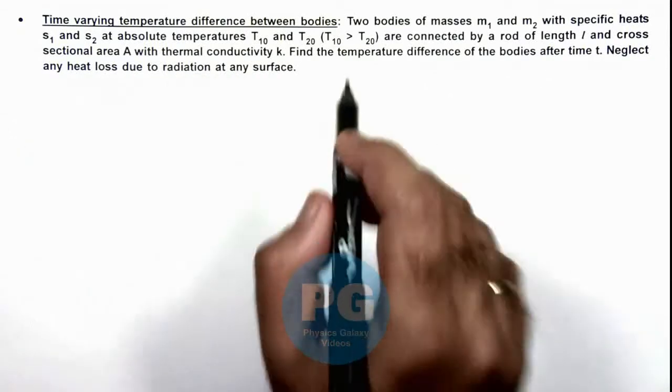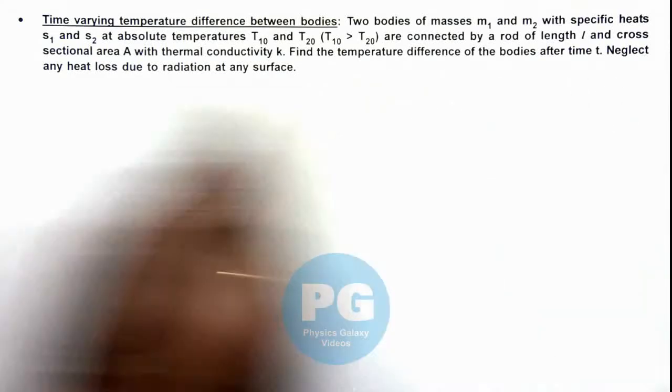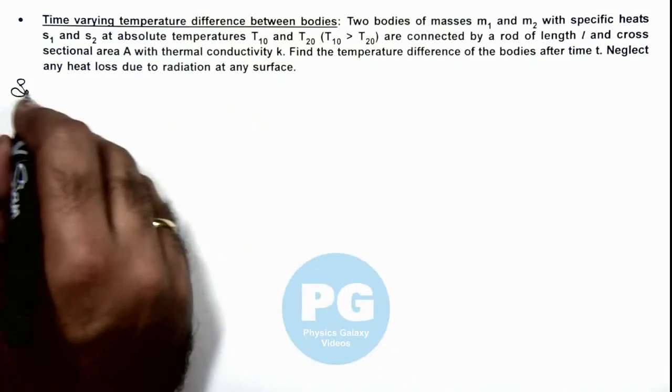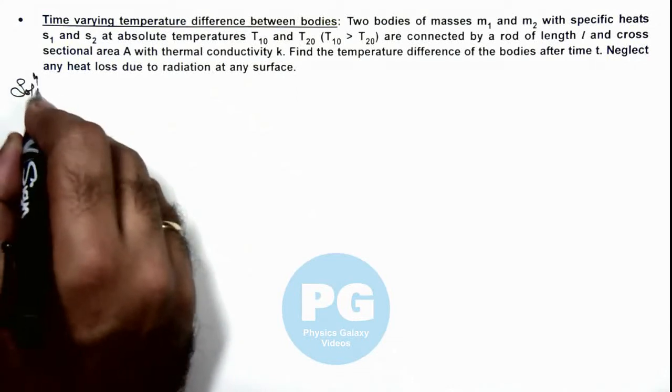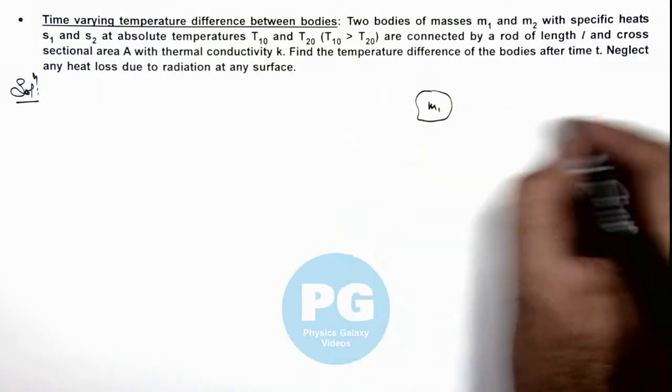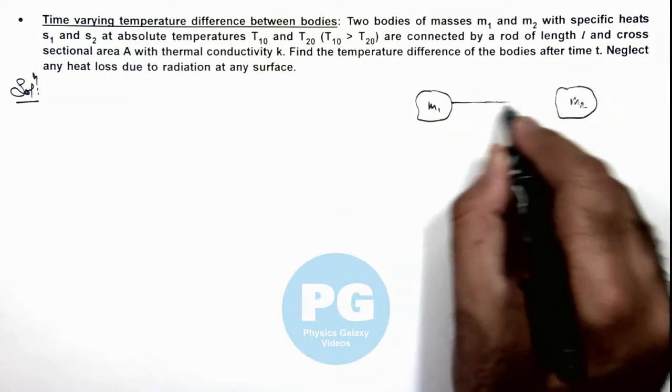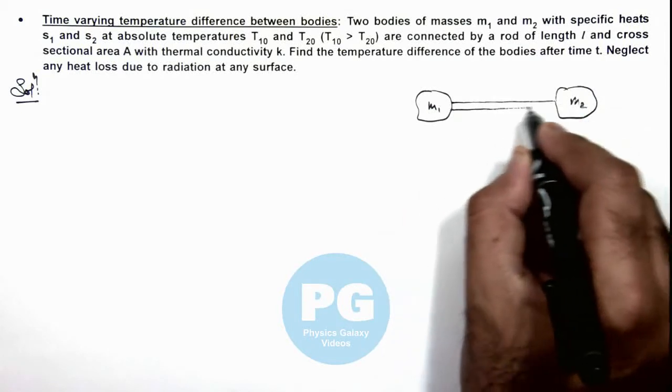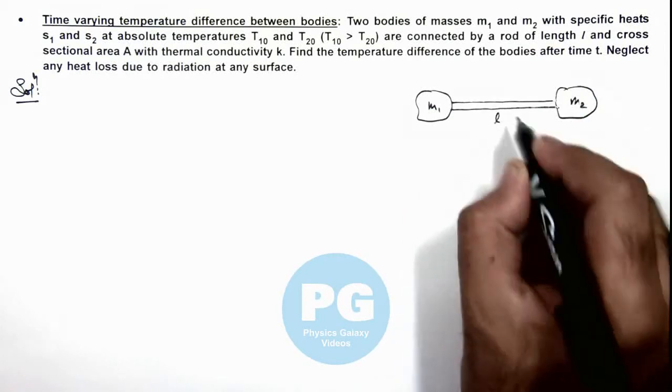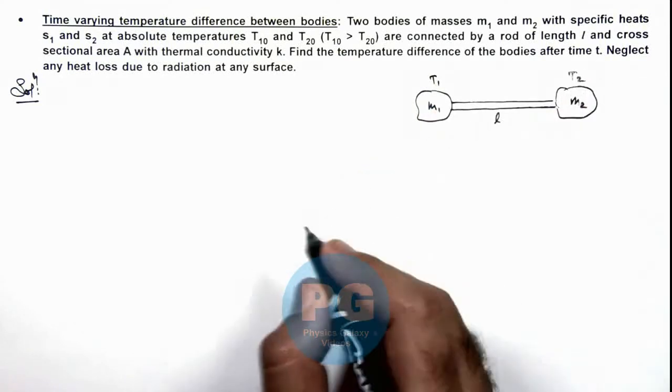We are required to find the temperature difference of the bodies after time t, and we can neglect any heat loss to surrounding. Here if we see the situation which is given like this, there are two bodies of masses m₁ and m₂ connected by a rod of length l. Their temperatures can be considered as T₁ and T₂ at any time.